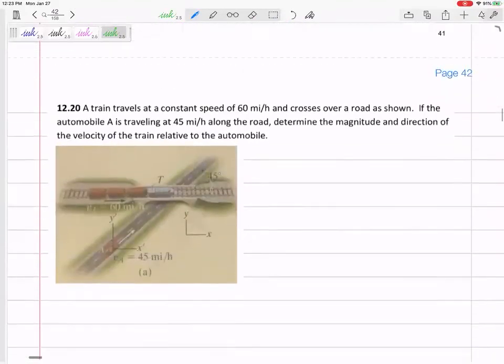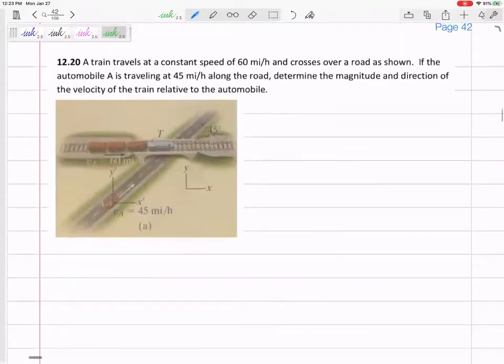Now let's work out some problems. All right, so you've got a train going at a constant speed of 60 miles per hour.